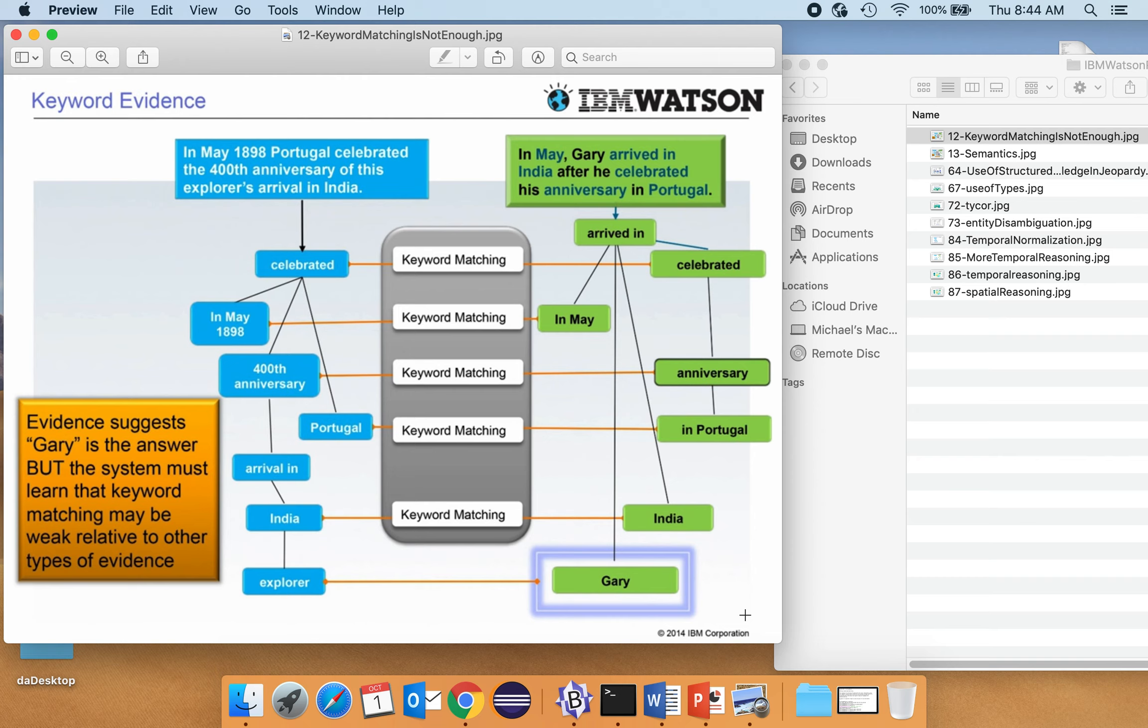I want to highlight some of the reasoning or inference that is going on in IBM Watson. So let's start out with these two sentences over here. This is the clue given in May 1898 Portugal celebrated the 400th anniversary of this explorer's arrival in India. And here is a random sentence you might find somewhere, maybe in a newspaper. In May, Gary arrived in India after he celebrated his anniversary in Portugal.